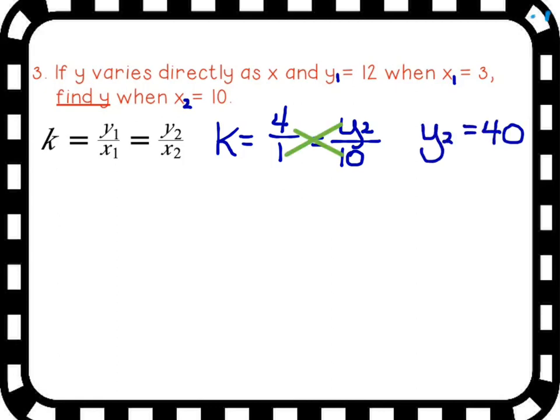Again, I'm going to change that 12 over 3 to a 4 over 1 and take my cross products. And I'm going to get the second y value that has to be 40 because they have to have the same slope. All right, so that's your answer.